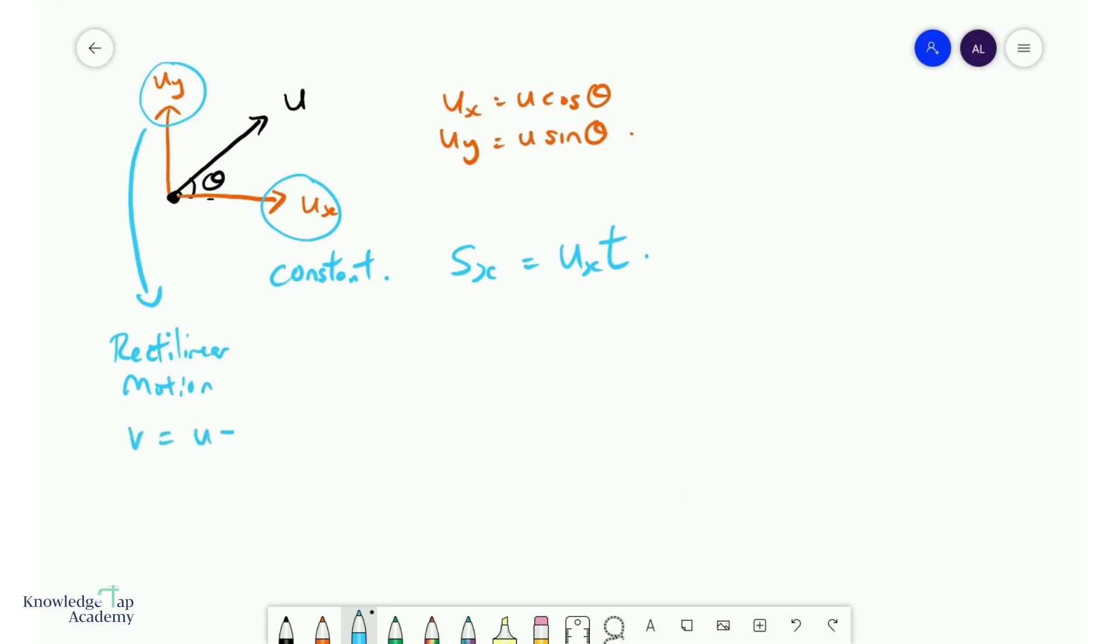We have v equals u plus at. Everything will be in the y domain now. sy equals uy t plus half ay t squared. And vy squared equals uy squared plus 2 ay sy.